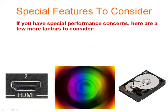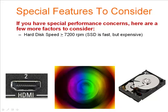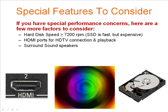Special features to consider: if you have special performance concerns, here are a few more factors you should consider. The hard disk speed — generally you want it to be 7,200 revolutions per minute or faster. Solid state disks are also fast, but as I mentioned before, they are expensive. Also consider HDMI ports for HDTV connection and playback, and surround sound speakers for your entertainment.